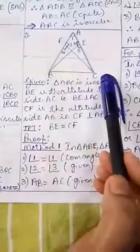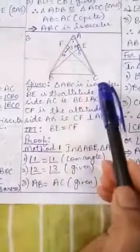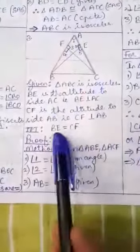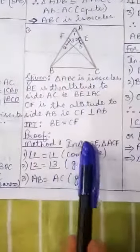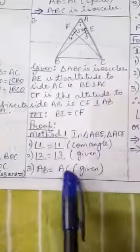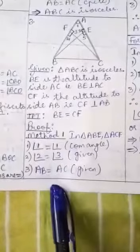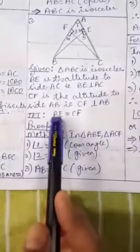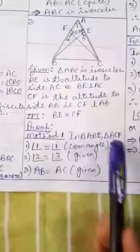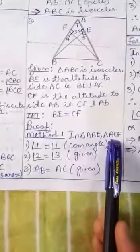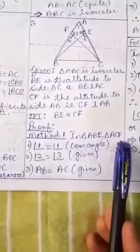In an isosceles triangle the altitudes on the equal sides are also equal — that is what we have to prove. We can prove this result in two different ways. We will see the first method here. BE is a side of triangle ABE, and CF is a side of triangle ACF. So let us take up these two triangles and prove that they are congruent to each other.